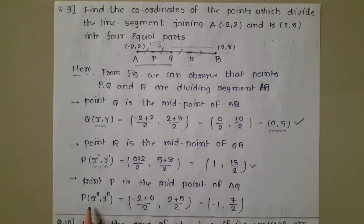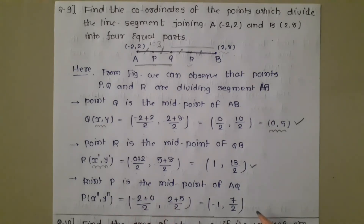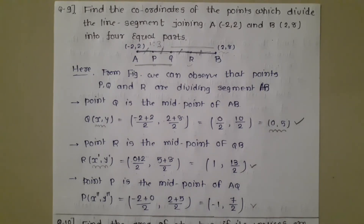R = ((0+2)/2, (5+8)/2) = (1, 13/2). For point P, which is the midpoint of AQ, with A(-2, 2) and Q(0, 5): P = ((-2+0)/2, (2+5)/2) = (-1, 7/2). So the three coordinates are P(-1, 7/2), Q(0, 5), and R(1, 13/2). This is the final answer.